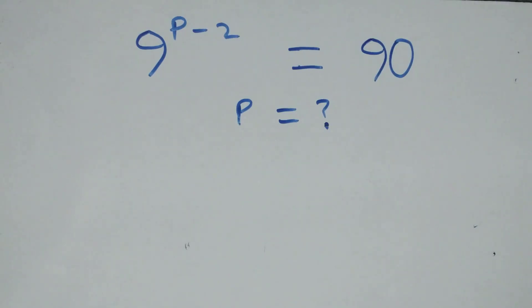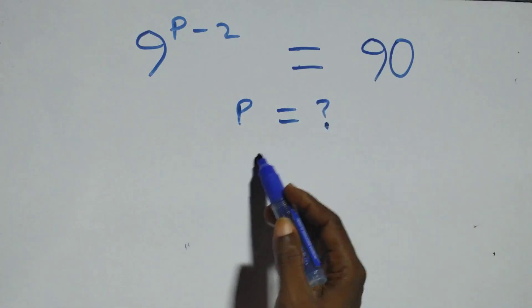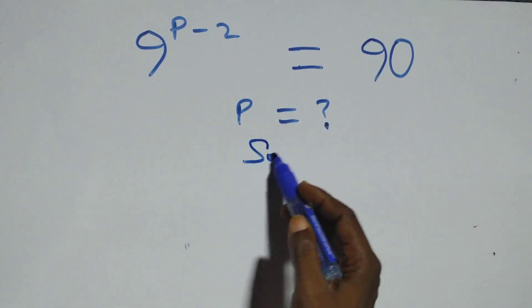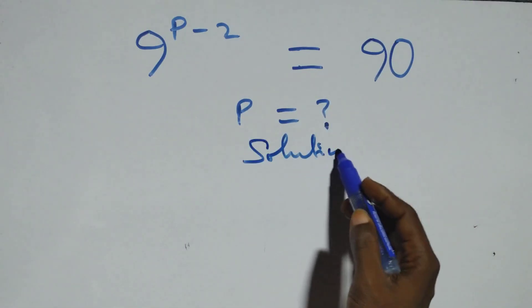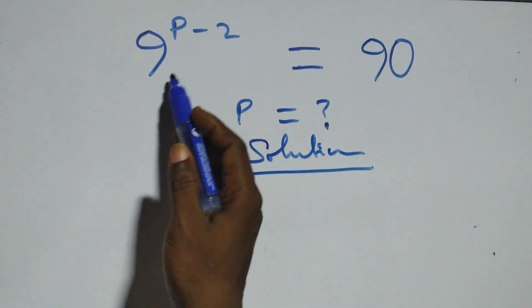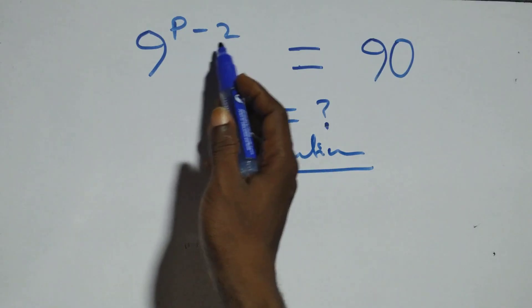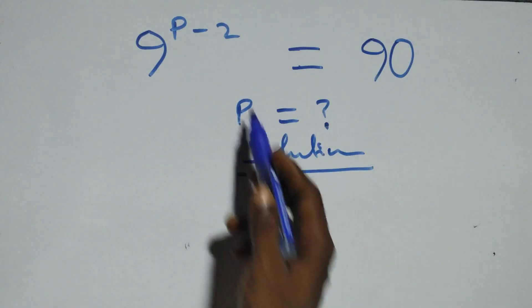Hello, you're welcome. How to solve this nice exponential equation? Solution from here. What we have here is 9 raised to power p minus 2 equals to 90.